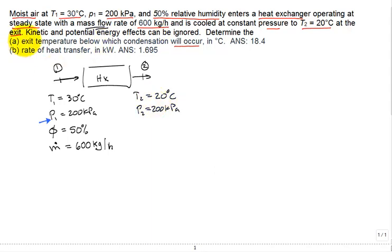Now the first part, they want to get the exit temperature below which condensation will occur. They're really asking you to calculate, based on this input, what is the dew point temperature. Because if you cool it to the dew point temperature, that's the temperature at which condensation will start to occur. So it's really a property of the inlet air.